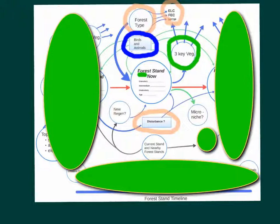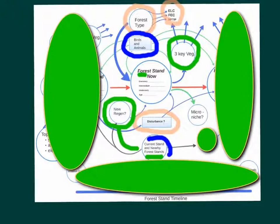For the regeneration, we'd like you to ponder on what regeneration do you see. Is there any new regeneration? And is that regeneration coming from the current stand or from other stands nearby? We'd like you to watch that video on the disturbances. And the last thing we want you to look at is micro niches. So we want you to be able to explain any types of sites that are, for example, if it's a wet site, why is there white birch growing there? So that's the first introduction of the forest stand now.